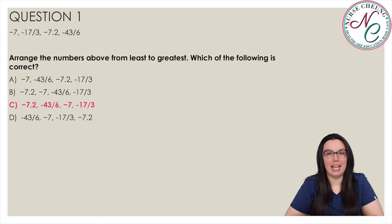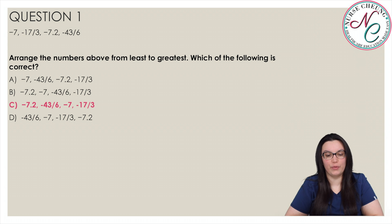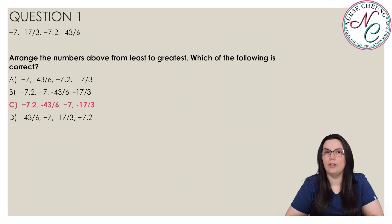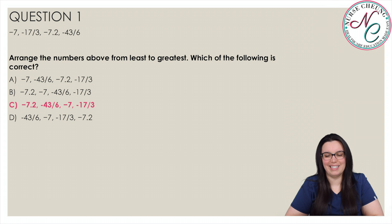The correct answer is C: negative 7.2, negative 43 over 6, negative 7, negative 17 over 3. We convert the fractions to decimals. The fraction negative 17 over 3 is equivalent to negative 17 divided by 3, which is approximately negative 5.667. The fraction negative 43 over 6 is equivalent to negative 43 divided by 6, which is approximately negative 7.167.